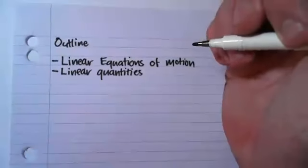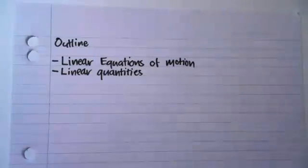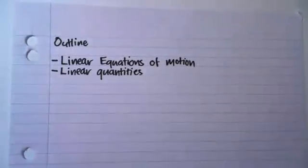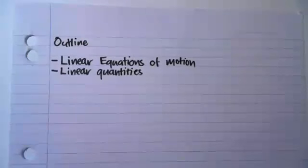The linear equations of motion come from our definitions of what displacement, velocity, and acceleration are, and how they are all related. Now kinematics deals with displacement, velocity, and acceleration without considering why there is displacement, velocity, and acceleration. So essentially it deals with motion without the causes of motion.